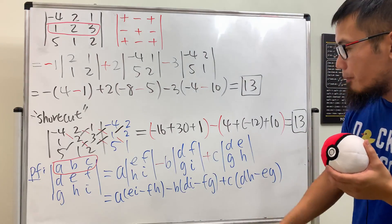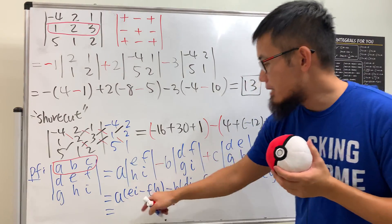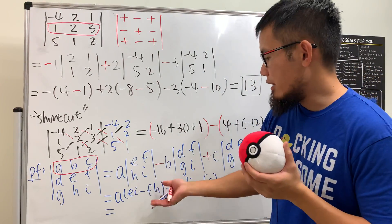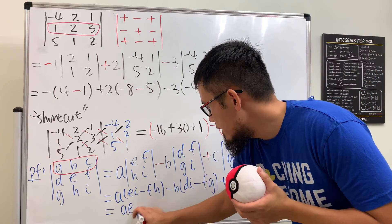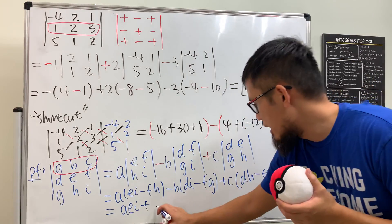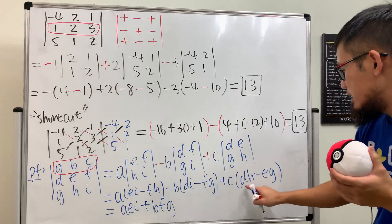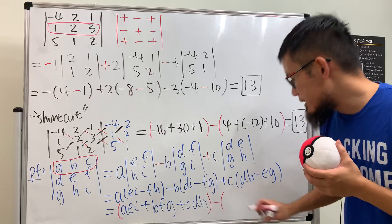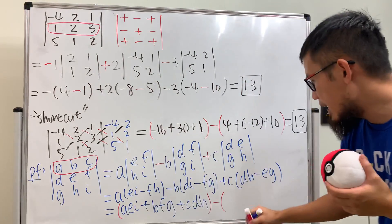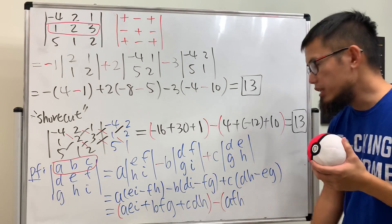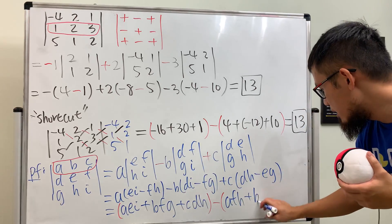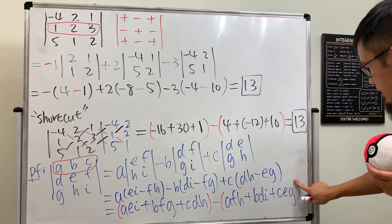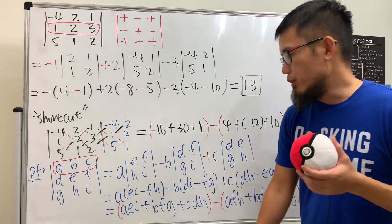Now I'll separate the positive and negative terms. The positive terms are: aei, then bfg, then cdh. The negative terms are: afh, then bdi, then ceg. So the determinant equals (aei + bfg + cdh) minus (afh + bdi + ceg).